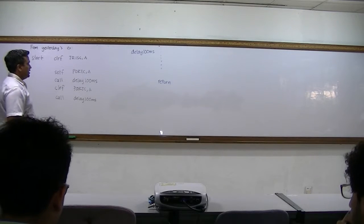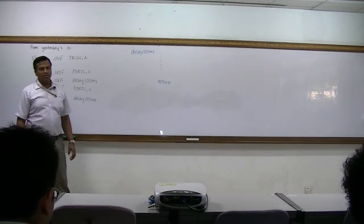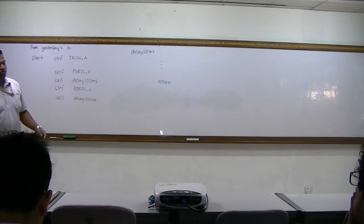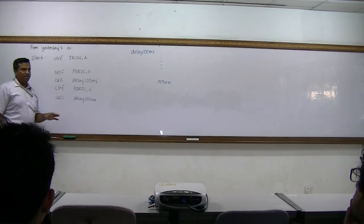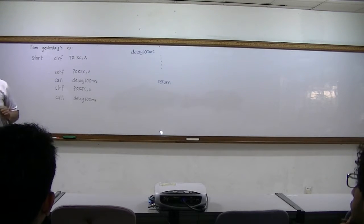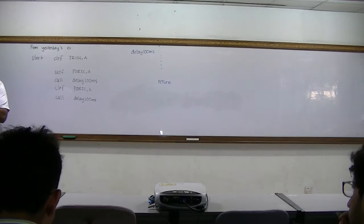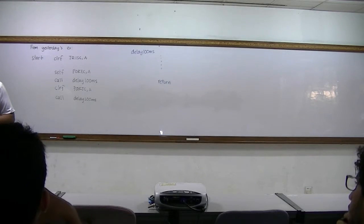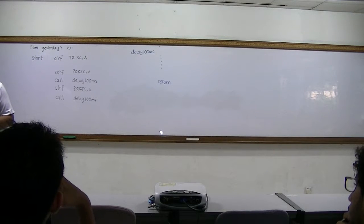Let's see another issue that arises whenever you are calling a subroutine. This is based on yesterday's example. Yesterday we had the example of making the LED blink. In yesterday's code we wrote the program such that the LED blinks continuously.